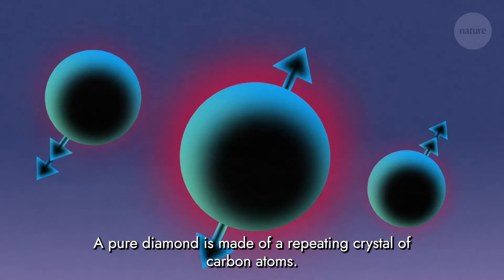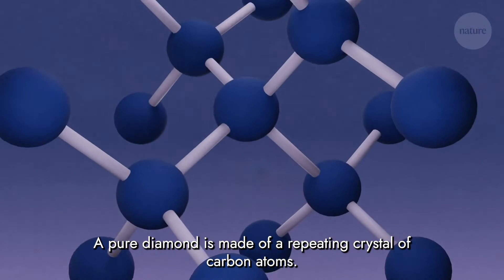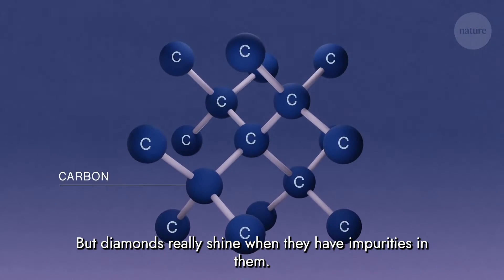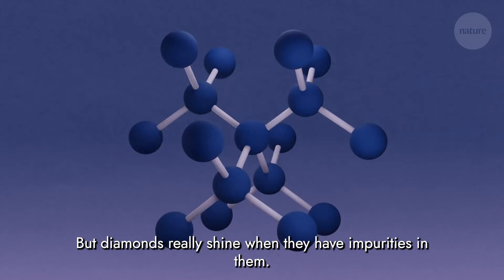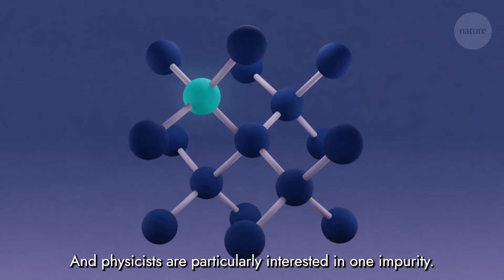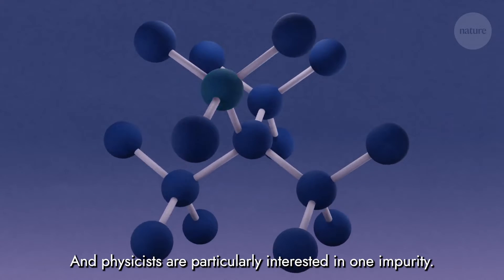A pure diamond is made of a repeating crystal of carbon atoms. But diamonds really shine when they have impurities in them, and physicists are particularly interested in one impurity.